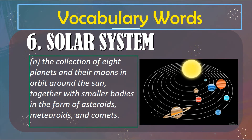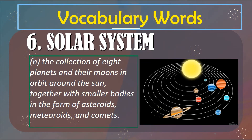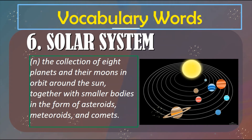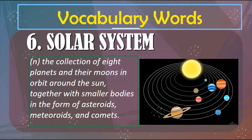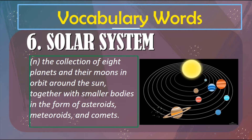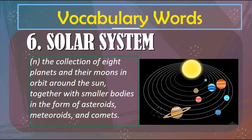We have the sun at the center, and the eight planets together with their moons. Mercury has zero moons, Venus has zero moons, Earth has one, Mars has two, Jupiter — if I am not mistaken — has 87. And there are many, many moons on some other planets. All of these are part of our solar system.